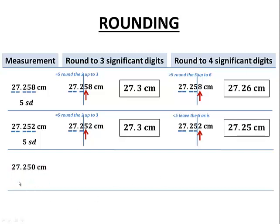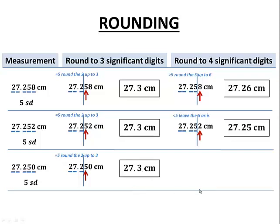On to the next example: 27.250 centimeters. This currently has five significant digits. Don't forget to count the trailing zero in a decimal number. Let's round it to three. We want to keep these three. We have to look at that five. It is equal to five, so we're going to take this two and round it up to three. So our rounded value will be 27.3 centimeters to three significant digits.